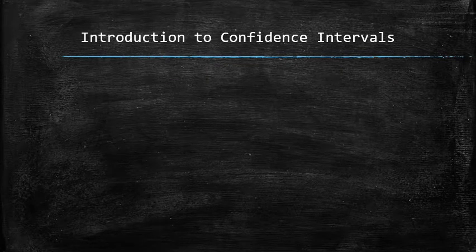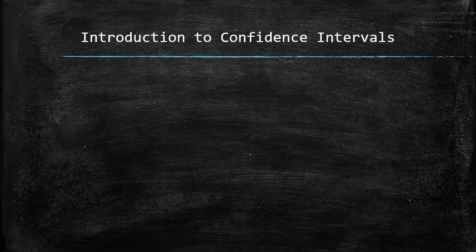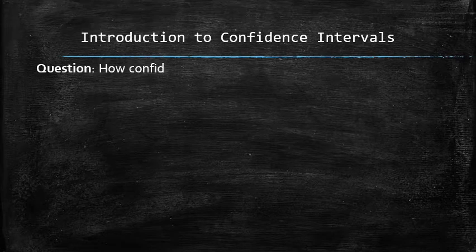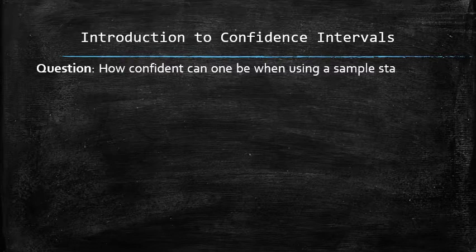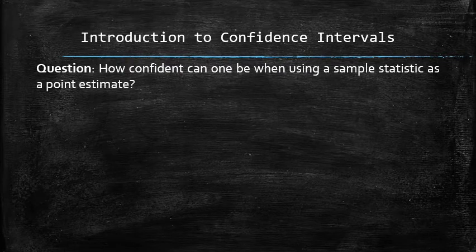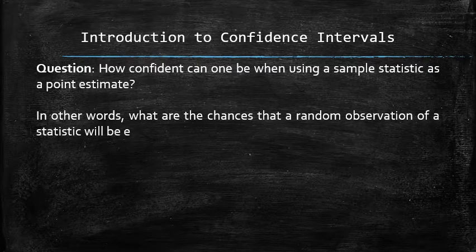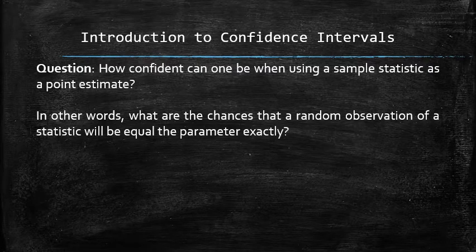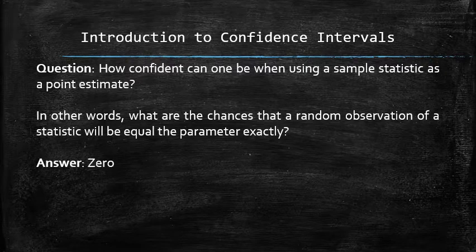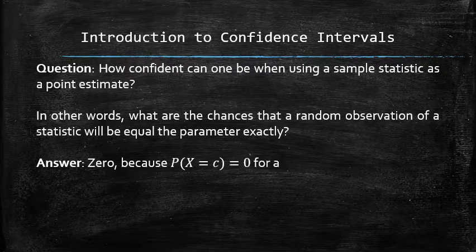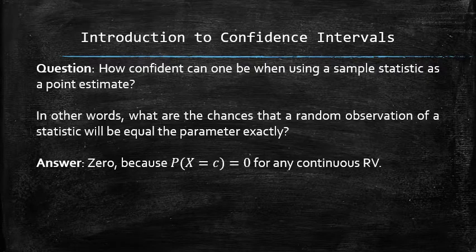Now that we know that we can estimate an unknown parameter with the appropriate sample statistic, we have the following question. How confident can one be when using a sample statistic as a point estimate? In other words, what are the chances that a random observation of a statistic will be equal to the parameter exactly? The answer is zero, because the sample statistic is a continuous random variable. And the probability of any continuous random variable being equal to a single value is always zero.